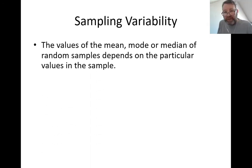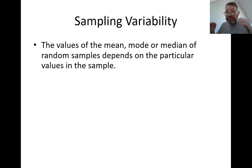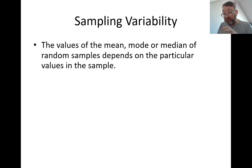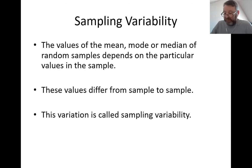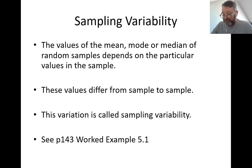The values of the mean, the mode, and the median of random samples depend on the particular values in each sample. We work with each sample individually, then pool their results into one statistical exercise. That exercise has revealed that the more samples we have, the greater the chance that we will truly model what the population feels or says about a particular question. This variation between samples is called sampling variability.